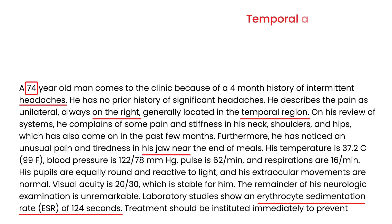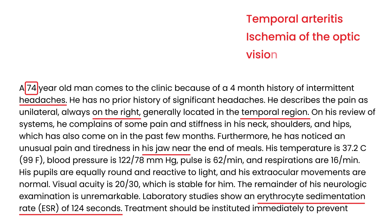Treatment should be instituted immediately — but to prevent what? This is again temporal arteritis. Because of the inflammation in that artery, it can cause narrowing and occlusion of the lumen, leading to ischemia. The arteritis can affect branches of the ophthalmic artery, causing ischemia of the optic nerve, which leads to progressive vision loss. So the answer to this question is progressive vision loss.